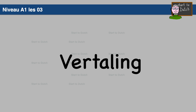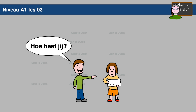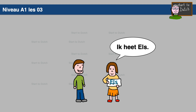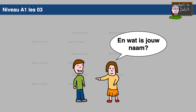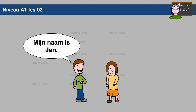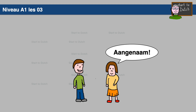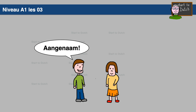Let's take a look at the translation. Hoe heet jij? — What are you called? Ik heet Els. — I am called Els. Mijn naam is Els. — My name is Els. And what is jouw naam? — And what's your name? Mijn naam is Jan. — My name is Jan. Aangenaam. — Pleased to meet you.